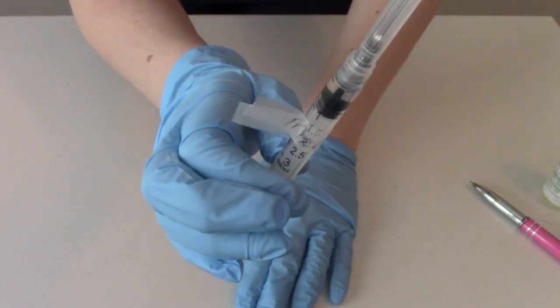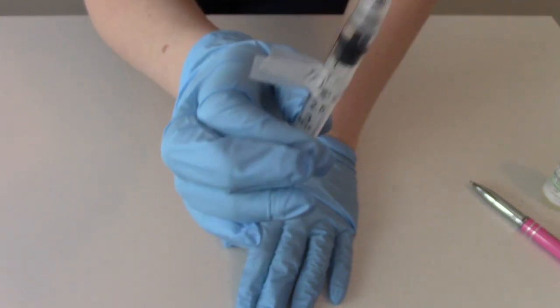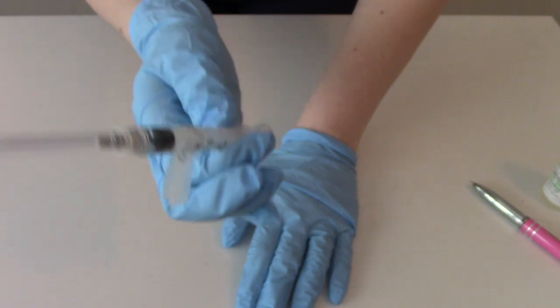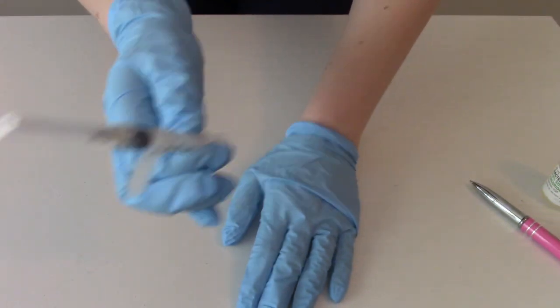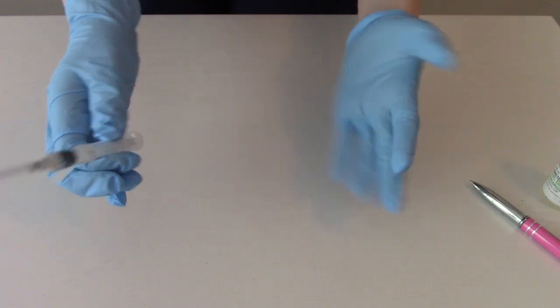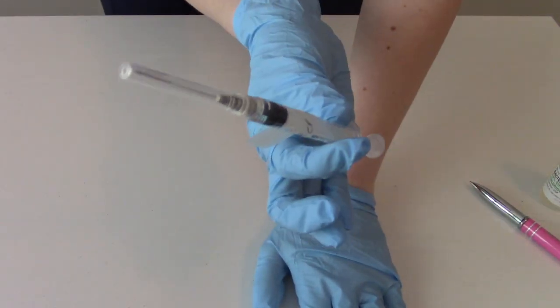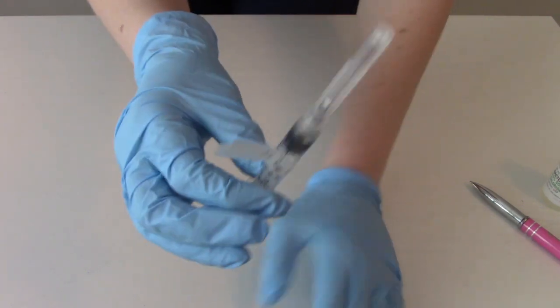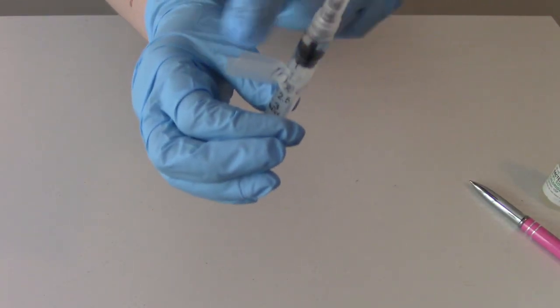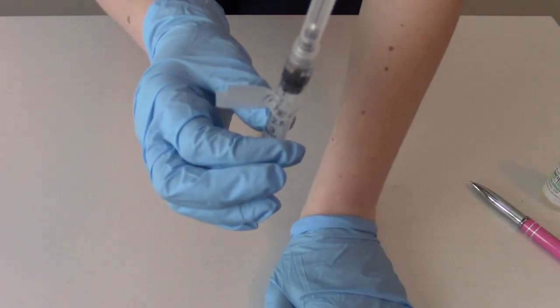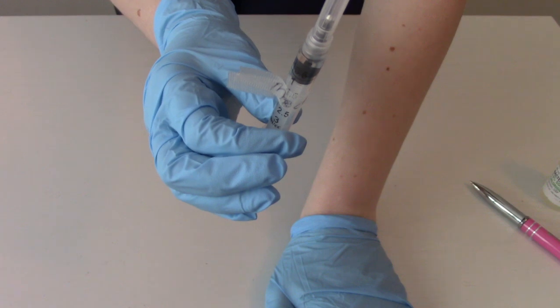One other thing I wanted to mention is we should always label our injections. Because if this was to fall on the floor or you saw it on somebody's computer on wheels and you weren't inside the room and it's just some random unknown clear liquid, we don't know what it is. So either take a piece of tape and write the name of the medication on it, or there's actual little stickers that are medication labels you can put on the syringe. That's just a safety thing you should always think of.